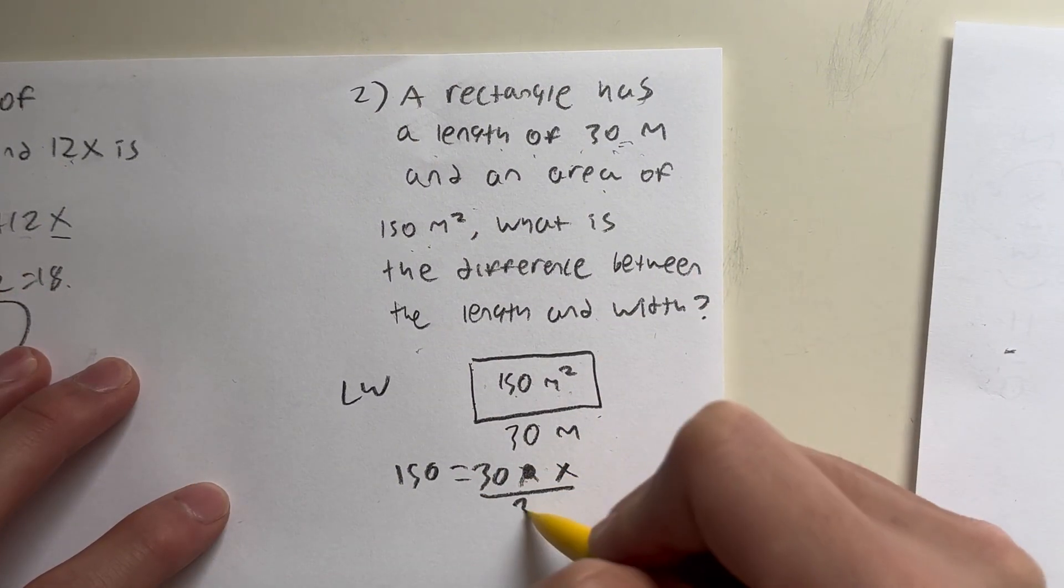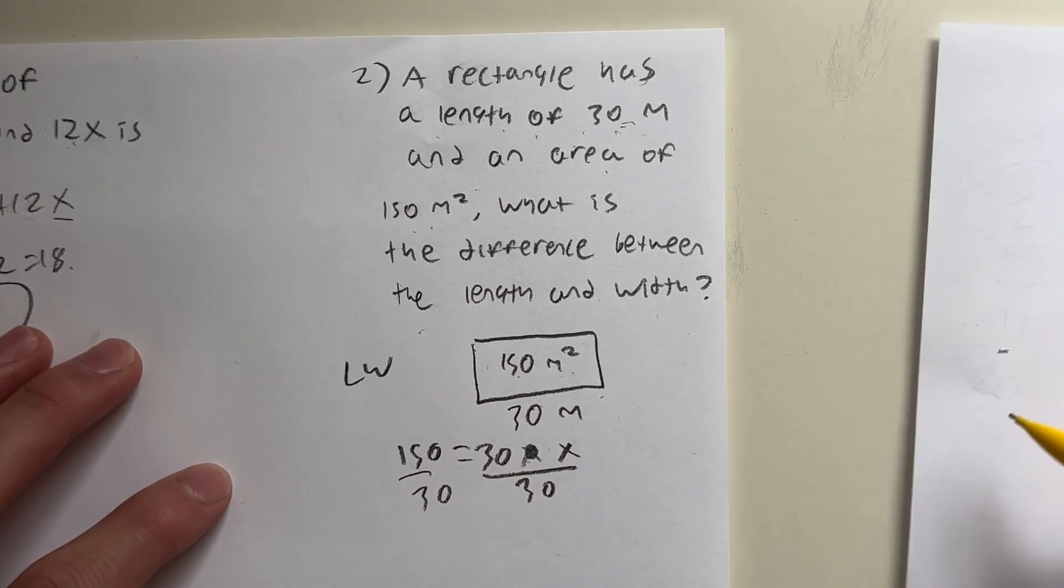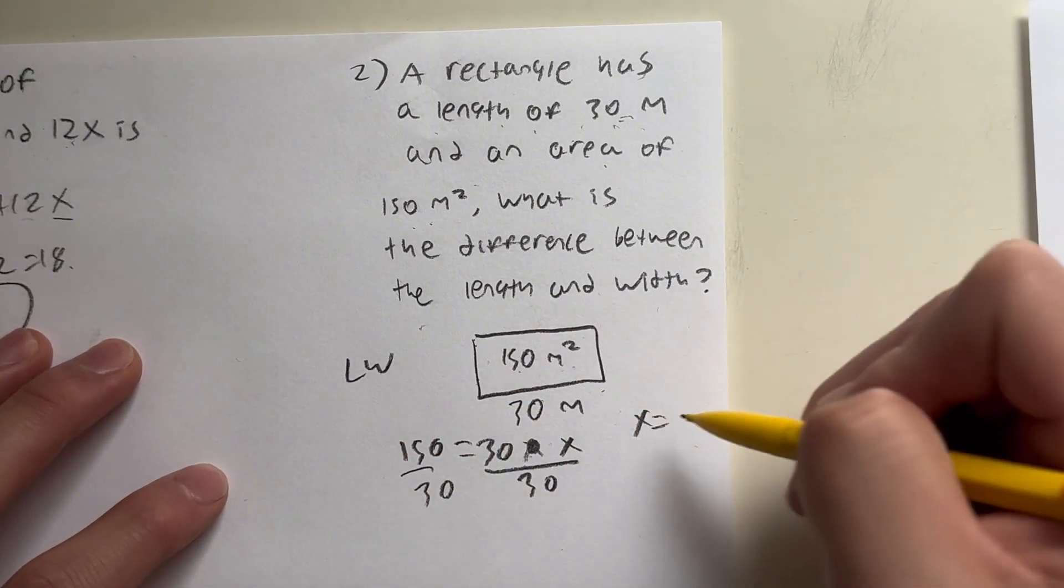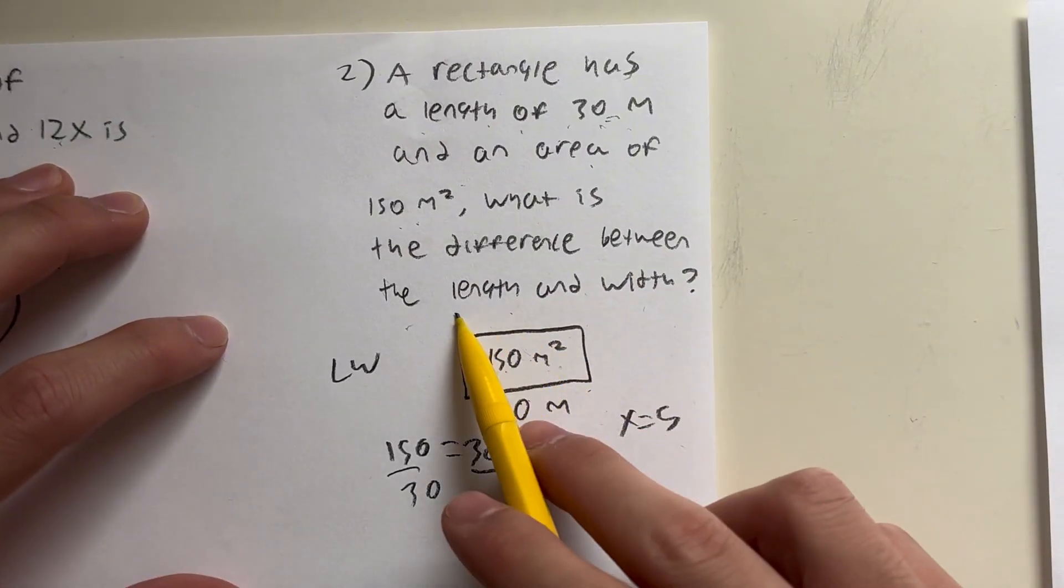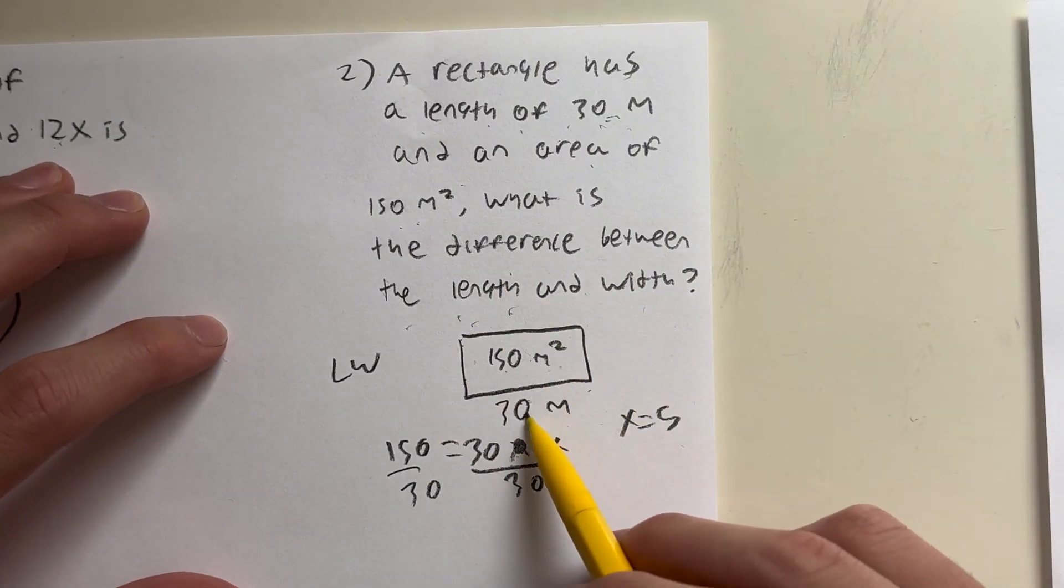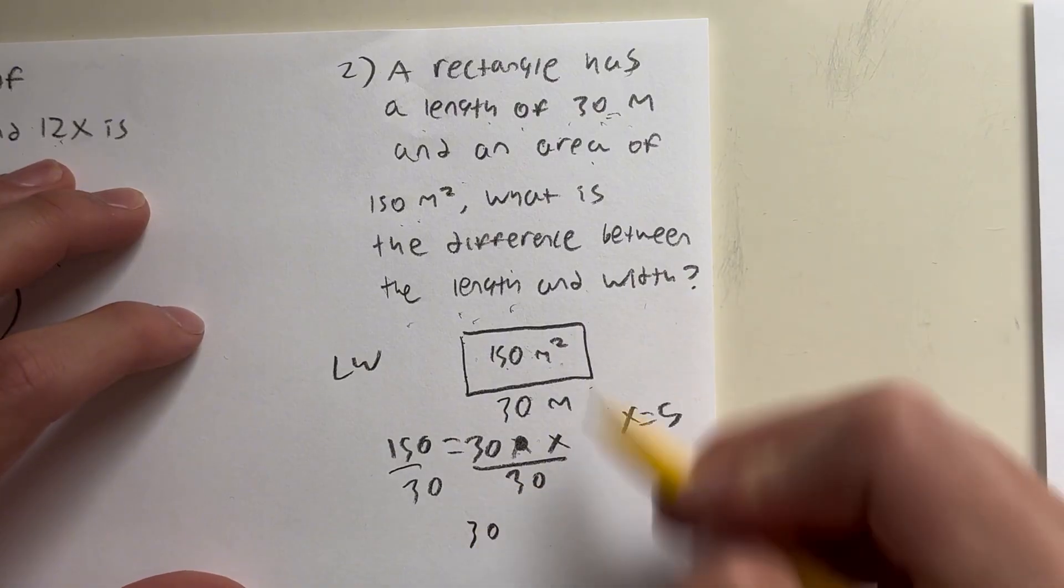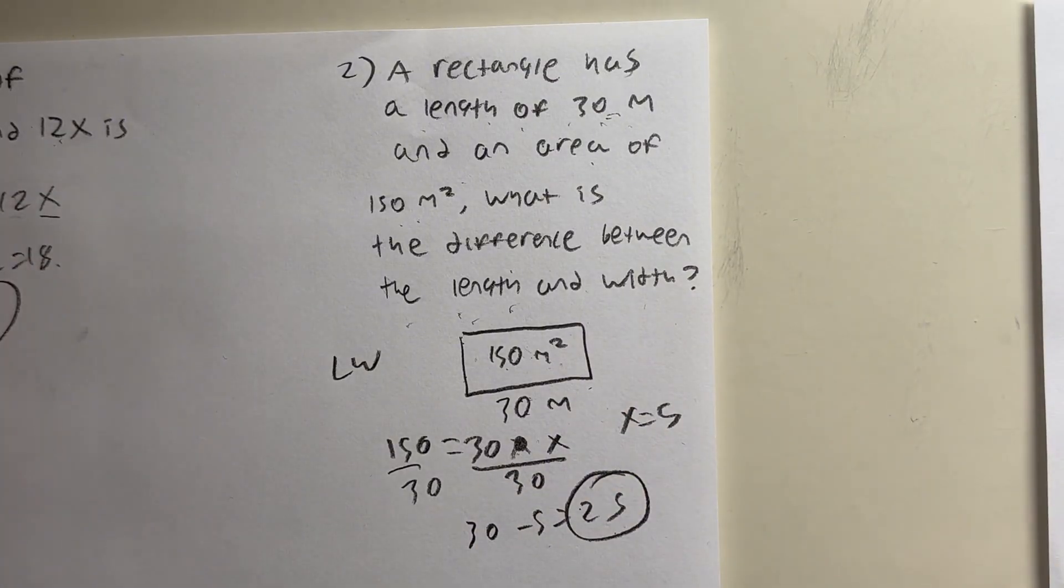And all we have to do, divide both sides by 30, and you end up with x is equal to 5 meters. So they're asking for the difference between the length and the width. Well, since we know that the length is 30 minus the width, which is 25, and that would be your answer.